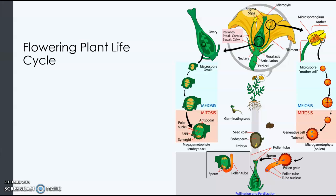A flowering plant life cycle is very similar to what we've seen. The plant itself is the sporophyte, so it does have a dominant sporophyte generation.